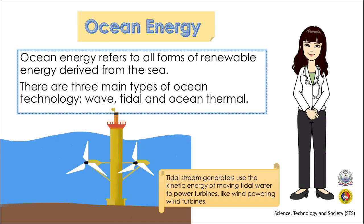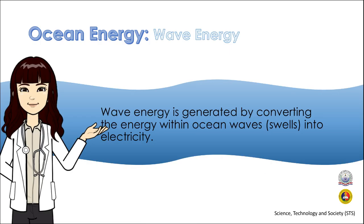Now let us move on to the next alternative energy: ocean energy. All forms of renewable energy derived from the sea are referred to as ocean energy. Ocean technology is divided into three categories: wave, tidal, and ocean thermal. The ocean can produce two types of energy: thermal and mechanical. Wave energy is produced when the wind flows over open water and creates waves. Wave energy is generated when electricity generators are placed on the surface of the ocean. The factors determining energy output include wave height, wave speed, wave length, and water density.